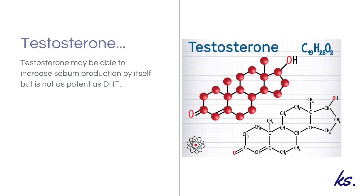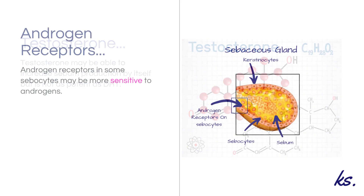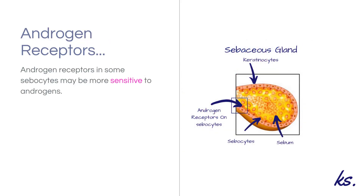Testosterone may be able to increase sebum output without being converted to DHT, but its effects are not going to be as potent. The role of androgens is a key factor in the production and output of sebum. It is not necessarily the amount of androgens that are circulating, but may be that some androgen receptors are more sensitive to androgens.